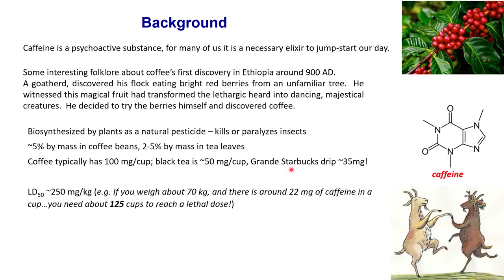If you've gone to Starbucks, a Grande drip is around 35 mg. This caffeine is keeping us happy and awake throughout the day. But if you take too much — the LD50, which is the lethal dose to kill 50% of the population — is about 250 mg per kg of body weight. So if you weigh about 70 kg and there's around 22 mg of caffeine per cup, you'd need to consume about 125 cups of coffee in one sitting.